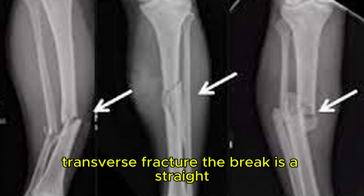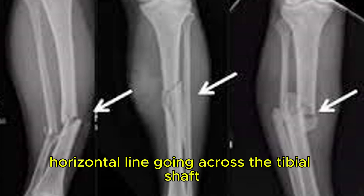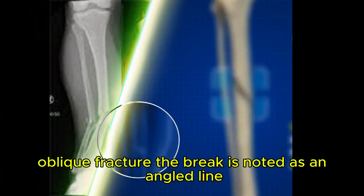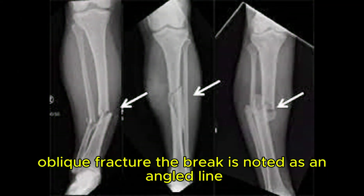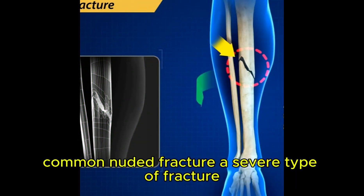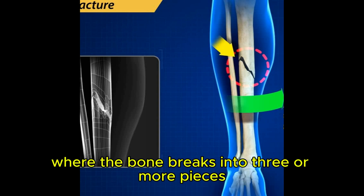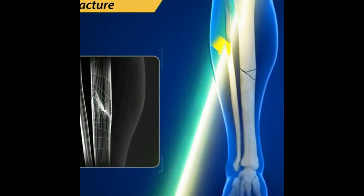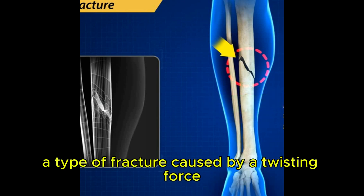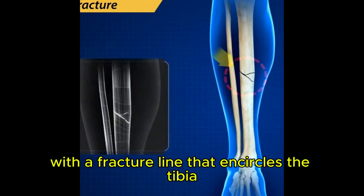Transverse fracture: the break is a straight, horizontal line going across the tibial shaft. Oblique fracture: the break is noted as an angled line across the tibial shaft. Comminuted fracture: a severe type of fracture where the bone breaks into three or more pieces. Spiral fracture: a type of fracture caused by a twisting force, with a fracture line that encircles the tibia.